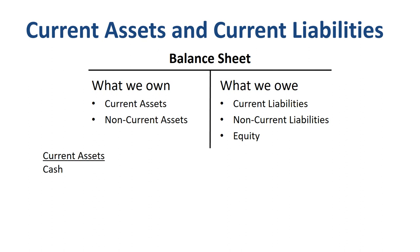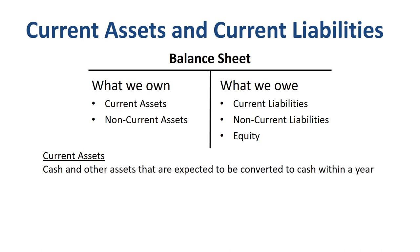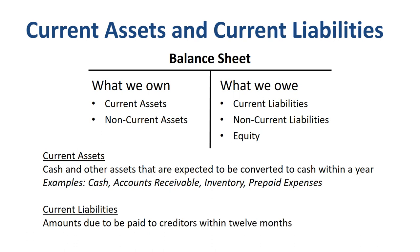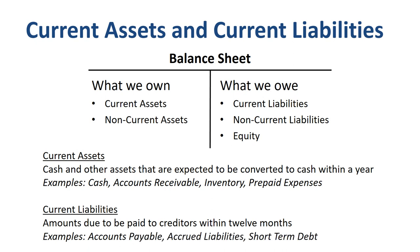Current assets are cash and other assets expected to be converted to cash within a year. Examples include cash, accounts receivable, inventory, and prepaid expenses. Current liabilities are amounts due to creditors within 12 months — examples include accounts payable, accrued liabilities, and short-term debt. The key distinction between current and non-current is whether an asset will be converted to cash, or a liability is due, within one year.